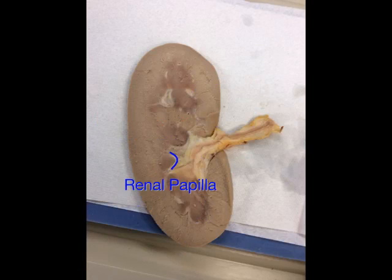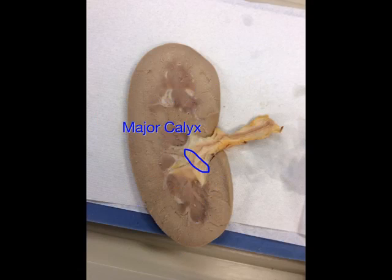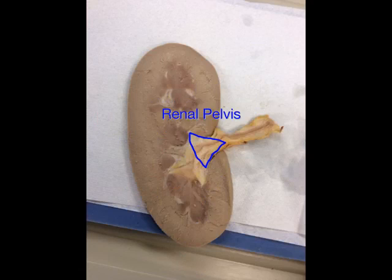At the end of a renal pyramid is the renal papilla. After the renal papilla are the minor calyx. Merging minor calyces forms the larger structure called the major calyx. And finally, all major calyces merge to form the renal pelvis.